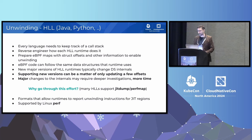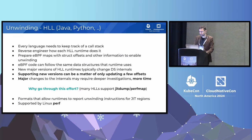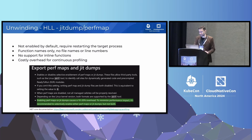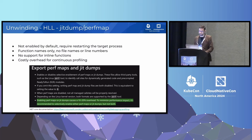Creating an unwinder for a complex runtime like HotSpot is a lot of work, but once done, runtimes don't change much version to version — for minor updates we often don't need to change anything. For major version updates, we can often use GDB scripting to automatically extract changed offsets. As for why not use JIT Dump or Perf Dump: those formats are not enabled by default and require restarting the target process or rebuilding a container. They only give function names — no file names, line numbers, or inline functions. Most importantly, working with them can be very CPU-intensive, making them unsuitable for low-overhead continuous profiling. For example, the .NET documentation notes that enabling PerfMaps or JIT Dumps can incur a 10–20% CPU hit, which is unacceptable for production.